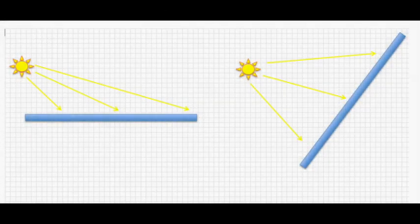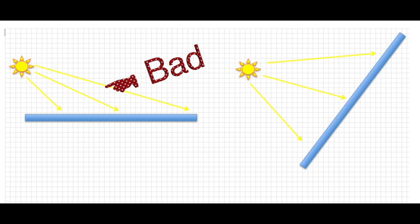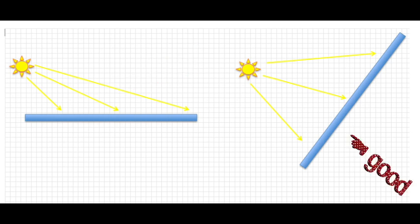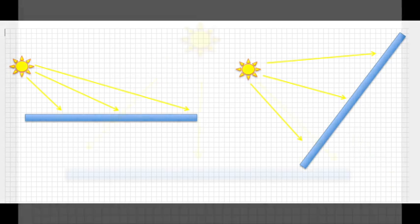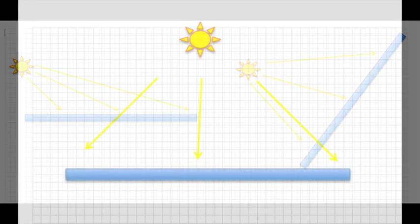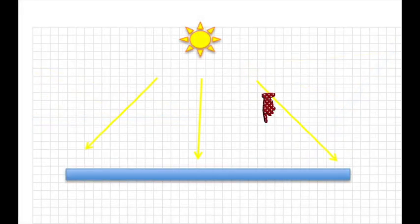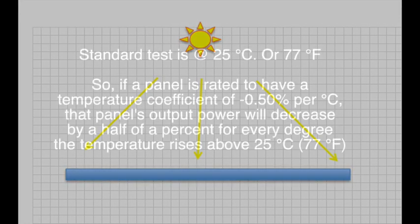In an ideal situation, your panel would be perpendicular or at 90 degrees to the angle of the sun. It's not always possible on a boat. So at midday on the equator when the sun is directly overhead, that's when you'd get the best performance from your panel. Again, not always possible.